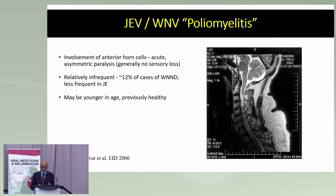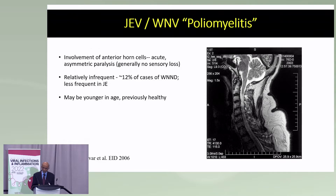When these viruses affect the spinal cord, they love to go to the anterior horn cells. So these patients present with a flaccid paralysis — people have called it a poliomyelitis-like syndrome. Of course, this is not polio. It often occurs in children at a younger age, and it doesn't have to be symmetric; it can very well be asymmetric.